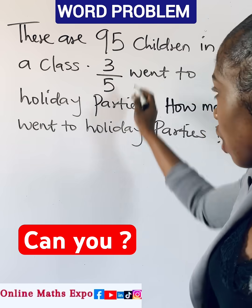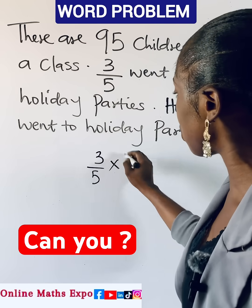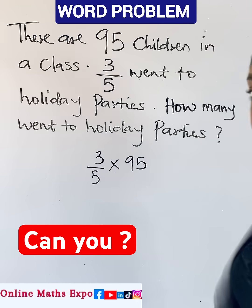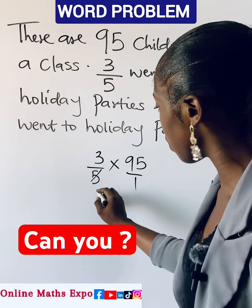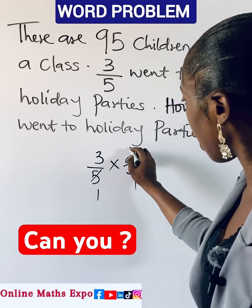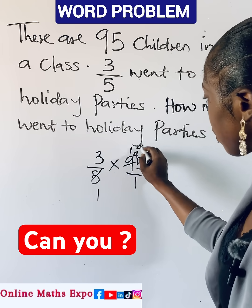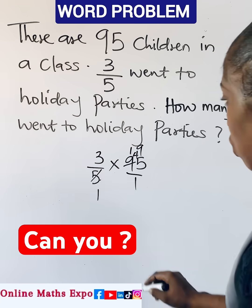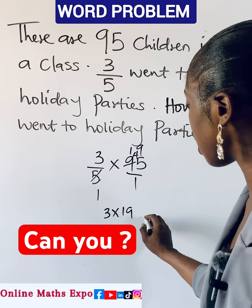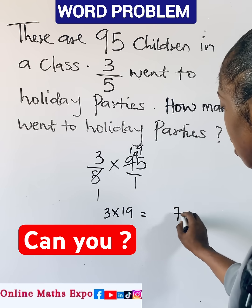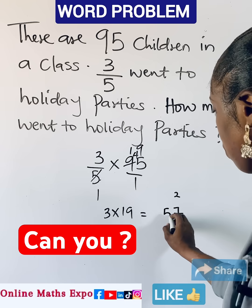So if you want to get the actual number, you need to take three-fifths of the total number of students. You are going to have three-fifths multiplied by 95, divided by one. Five goes into itself once, goes into 9 once with one remaining, five goes into 45 nine times. So we multiply three by 19: three times nine gives us 27, carry the two, three times one is three plus two gives us 57.